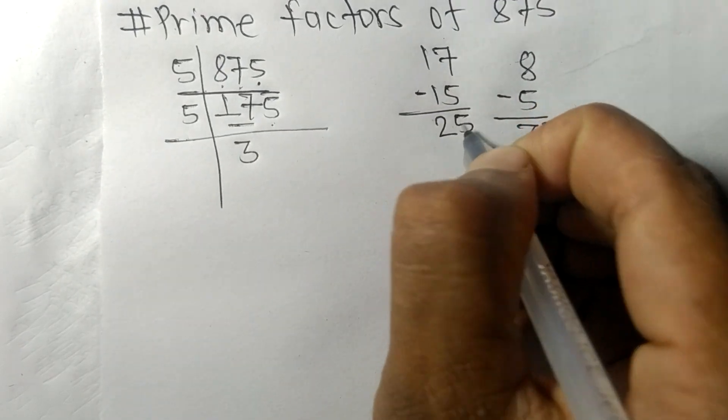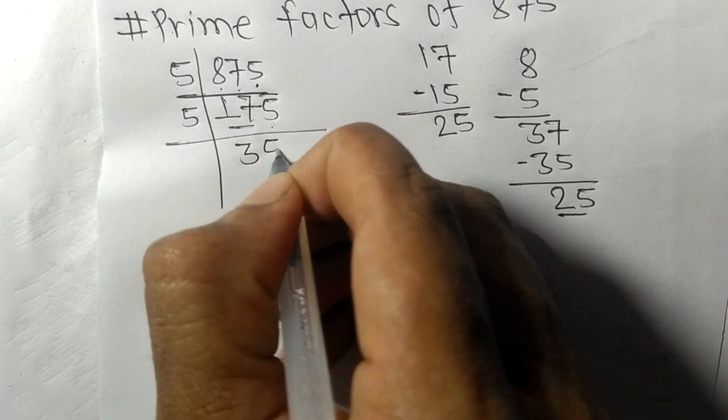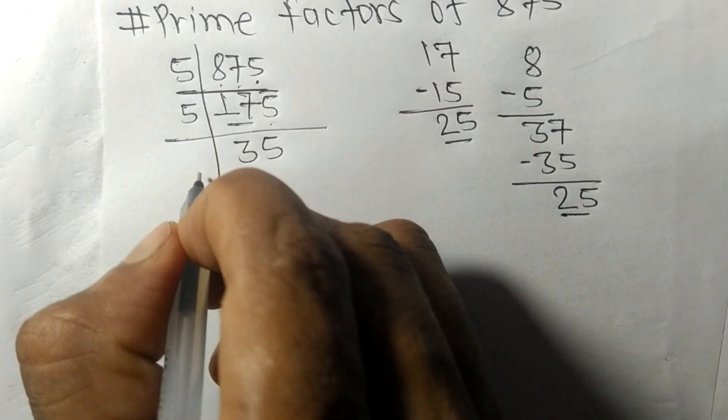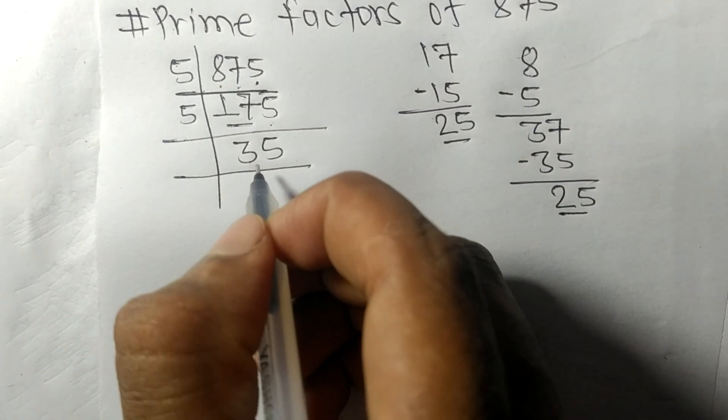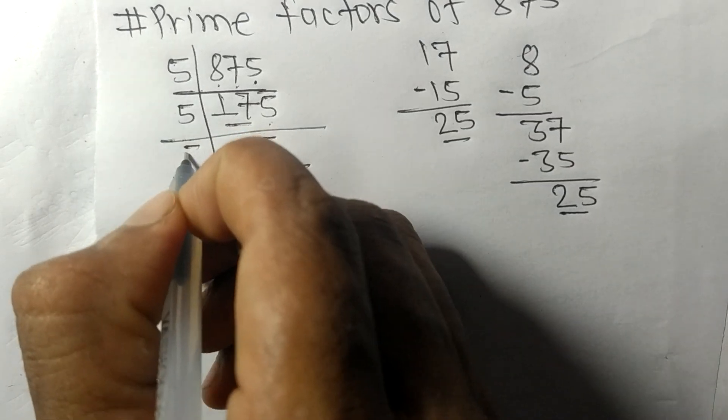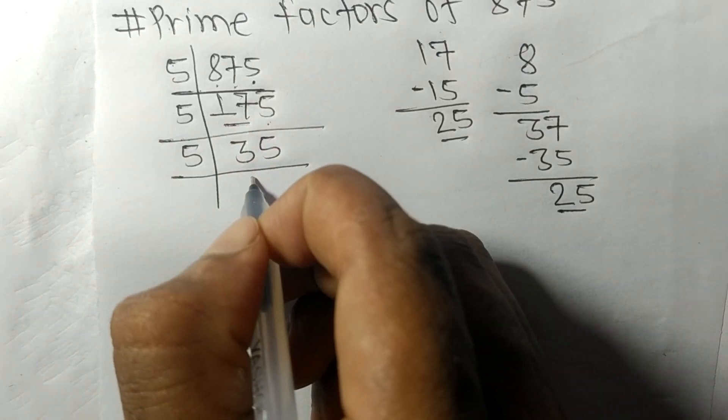Now we got 35 which is exactly divisible by 5, and we get 7.